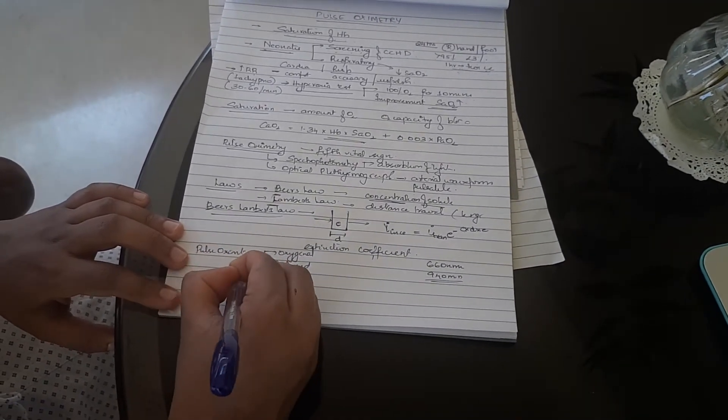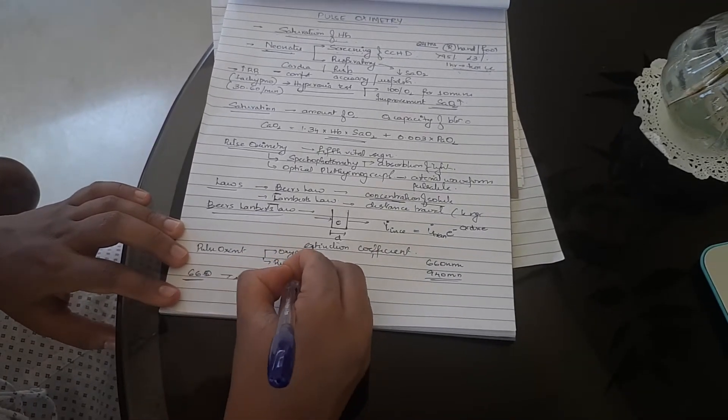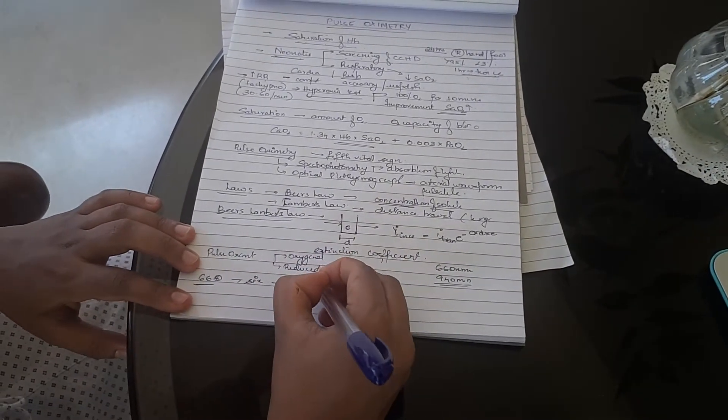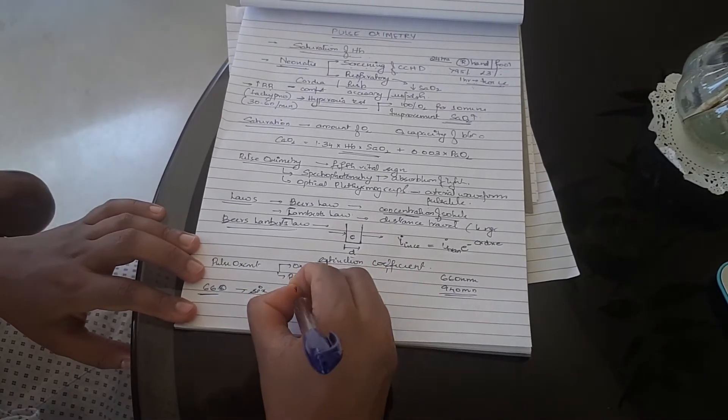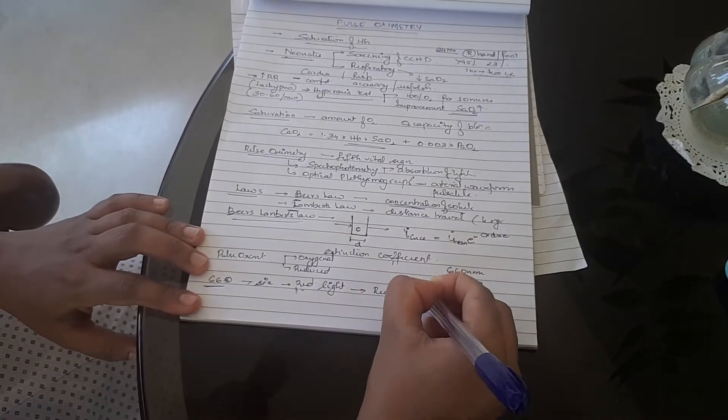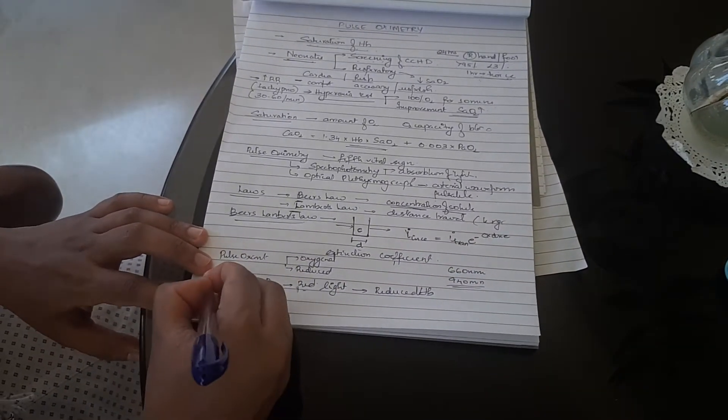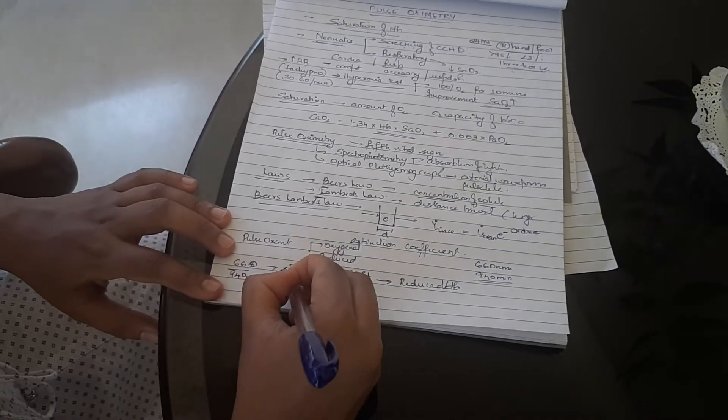660 nanometers - 6 sounds like sexy color. Sexy 6 means red. So 660 nanometers is for red light. Red light, R, is for reduced hemoglobin. So 660 nanometers, reduced hemoglobin absorbs more. 940 nanometers is for infrared light.